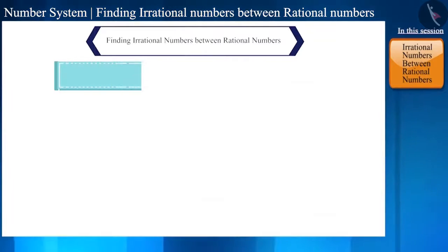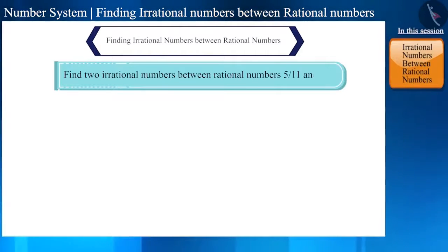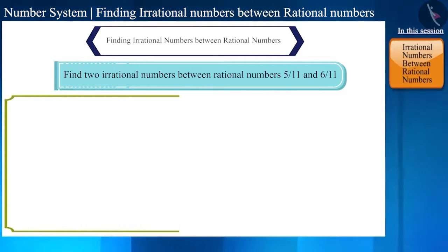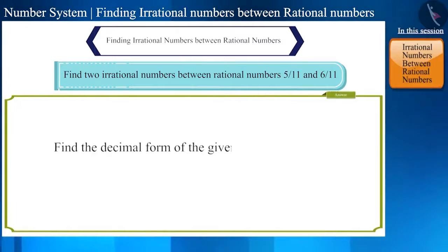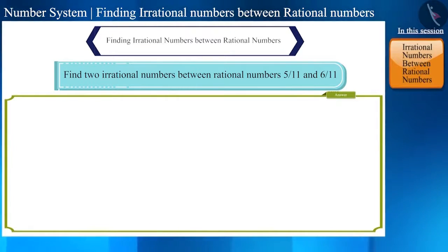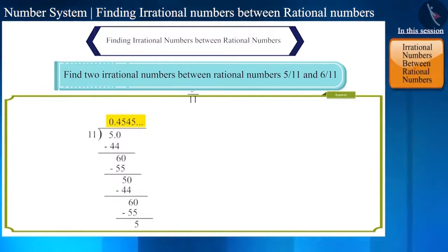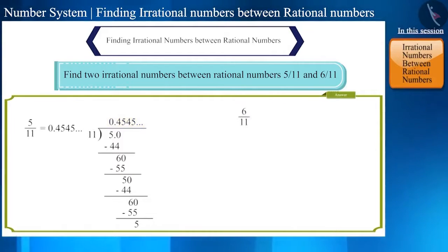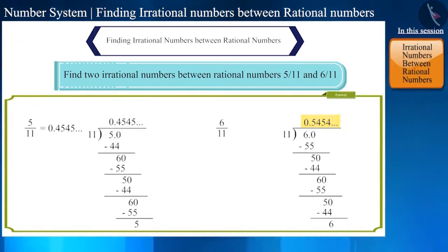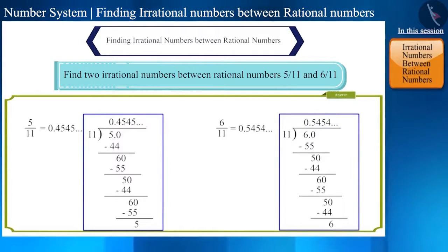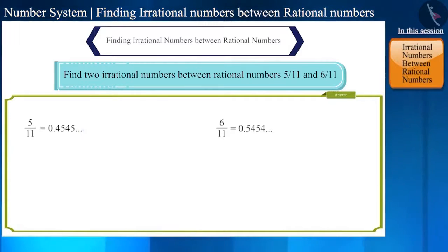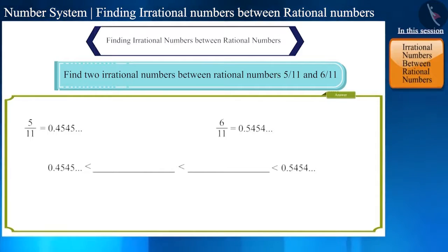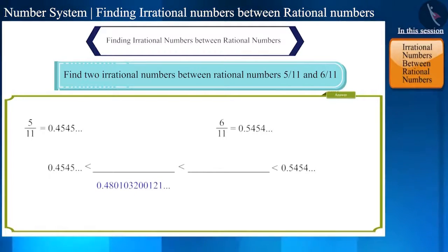Let us take another example: find two irrational numbers between the rational numbers 5 by 11 and 6 by 11. First, we will find the decimal forms of these rational numbers and then write two irrational numbers. The decimal form of 5 by 11 is 0.454545... and the decimal form of 6 by 11 is 0.545454... You can obtain these by the division method. We have to write two irrational numbers greater than 0.454545 and smaller than 0.545454. Can that decimal number be 0.4801032001... ? Yes.